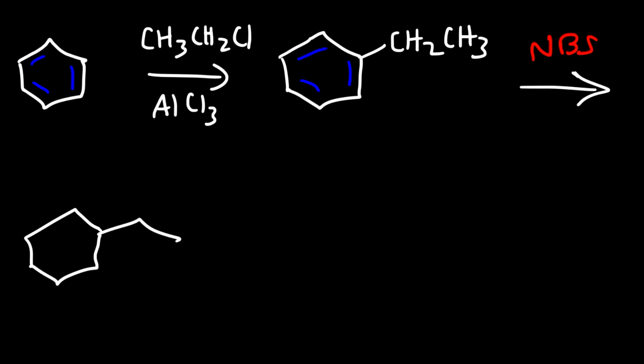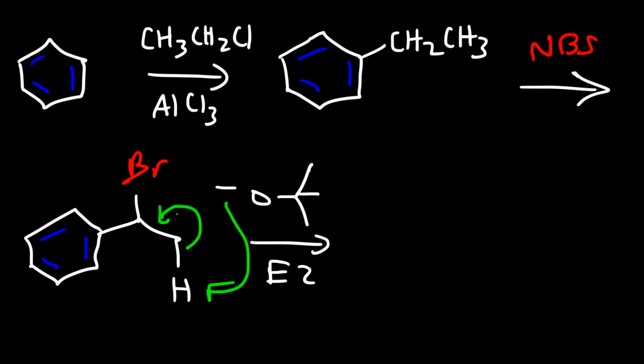So now the bromine atom is on a secondary carbon, as opposed to a primary carbon in the last example. Now what we're going to do is use a strong base. Let's use tert-butoxide. This is going to favor an E2 reaction. The sterically hindered base is going to go for the most accessible hydrogen, which has no choice but to go for the primary hydrogen. It's going to form a double bond, kicking out the bromine atom. Now notice that this double bond is conjugated with the benzene ring, and that makes it quite stable. And this molecule is called styrene. So that's how we can make it, starting from benzene.